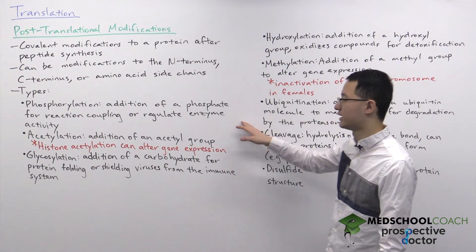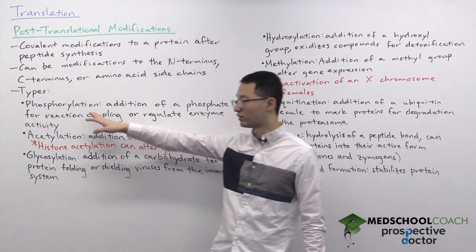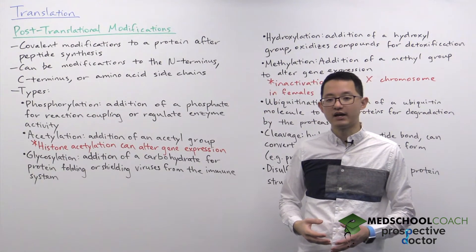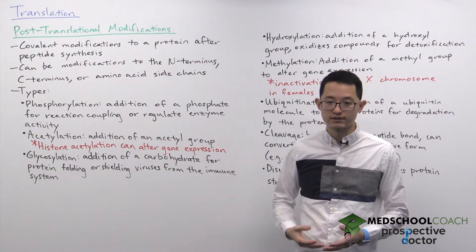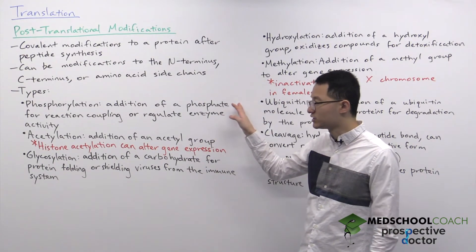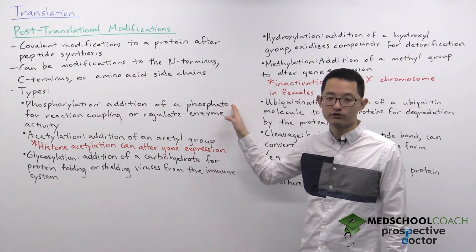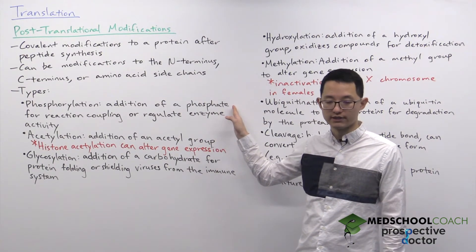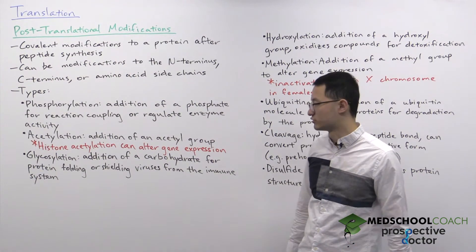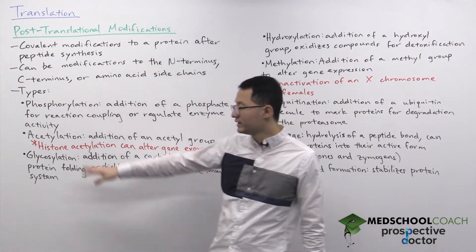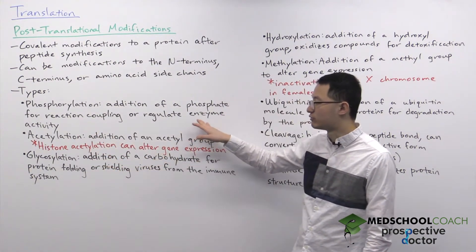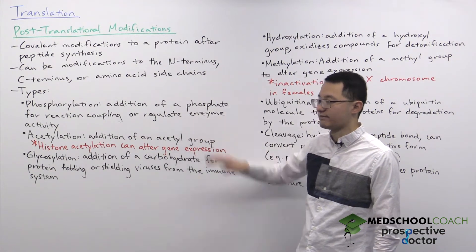We're going to start first by looking at phosphorylation, which is by far the most common type of post-translational modification. It involves the addition of a phosphate group to a protein, and there are two common examples where this is used: one is for reaction coupling and the other is to regulate enzyme activity.